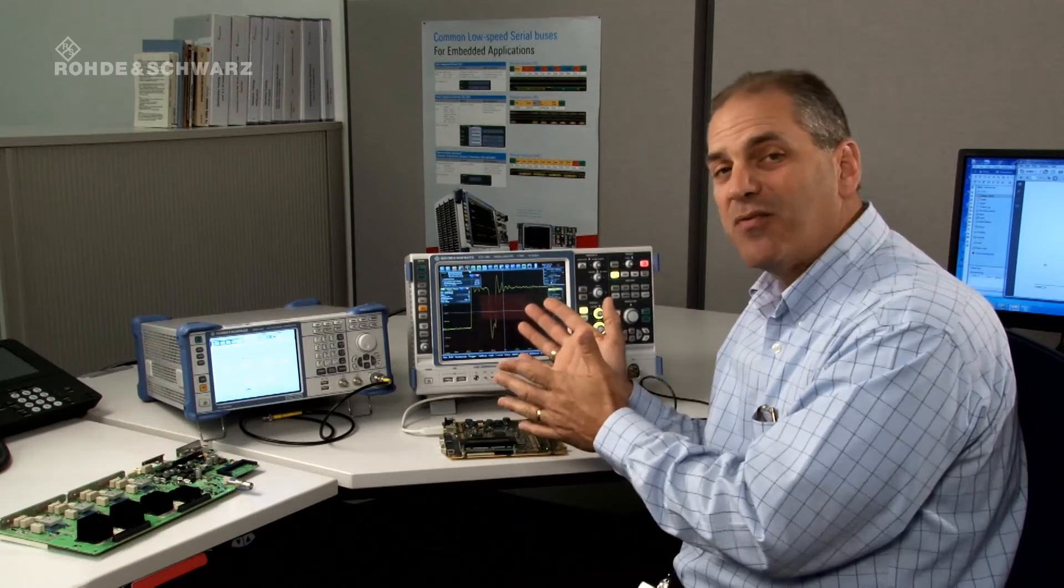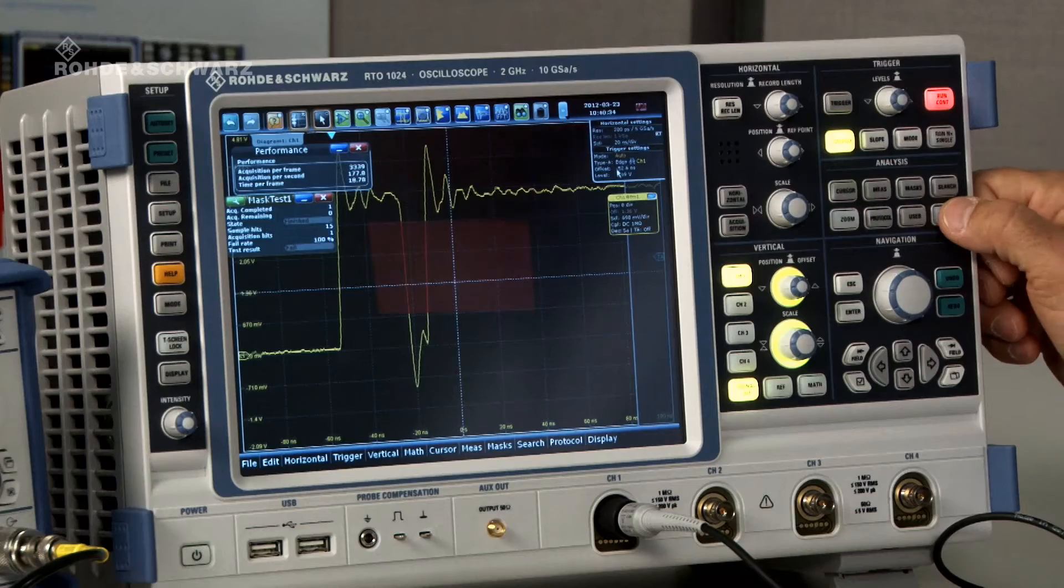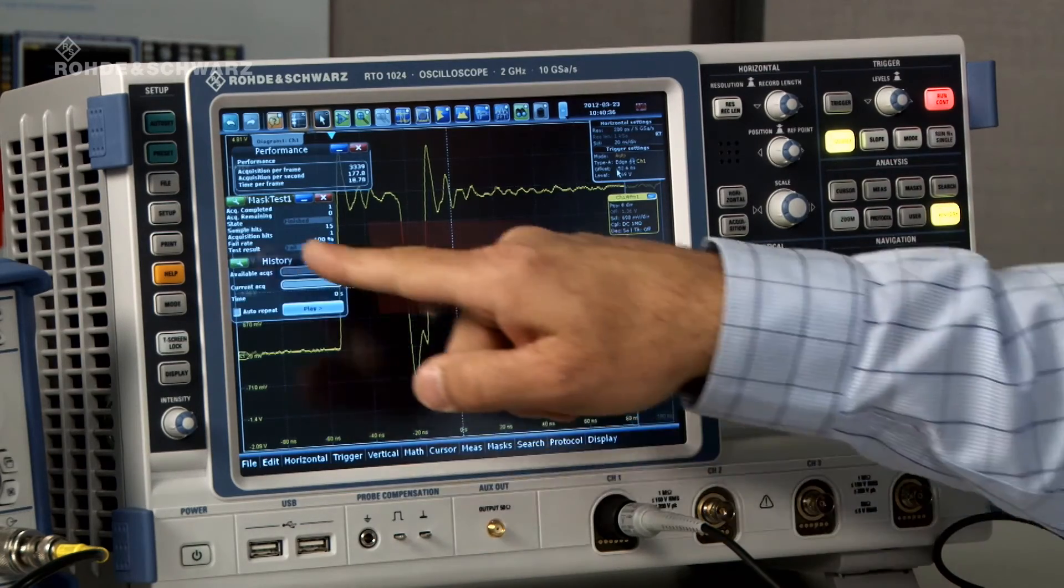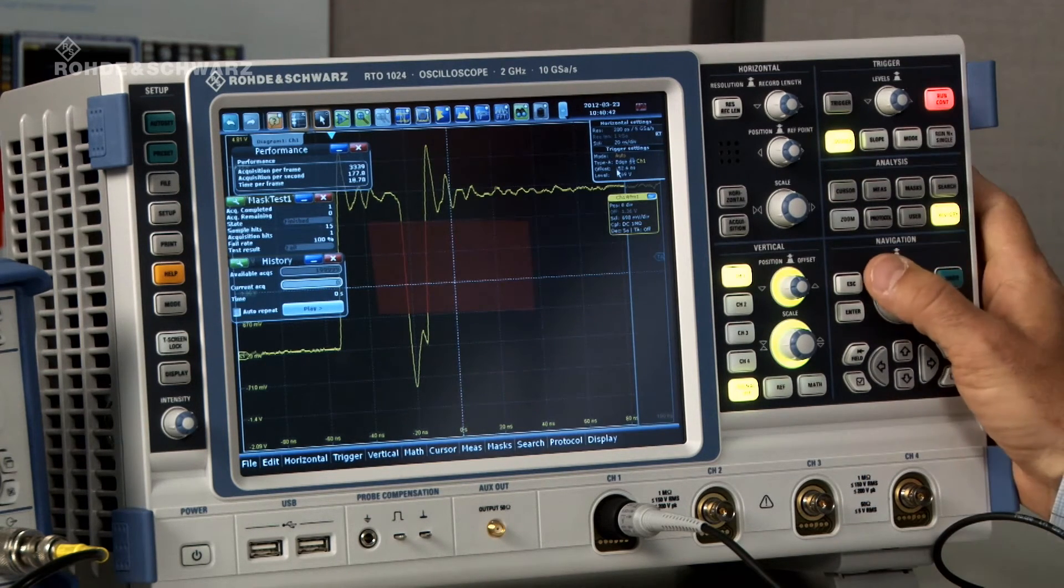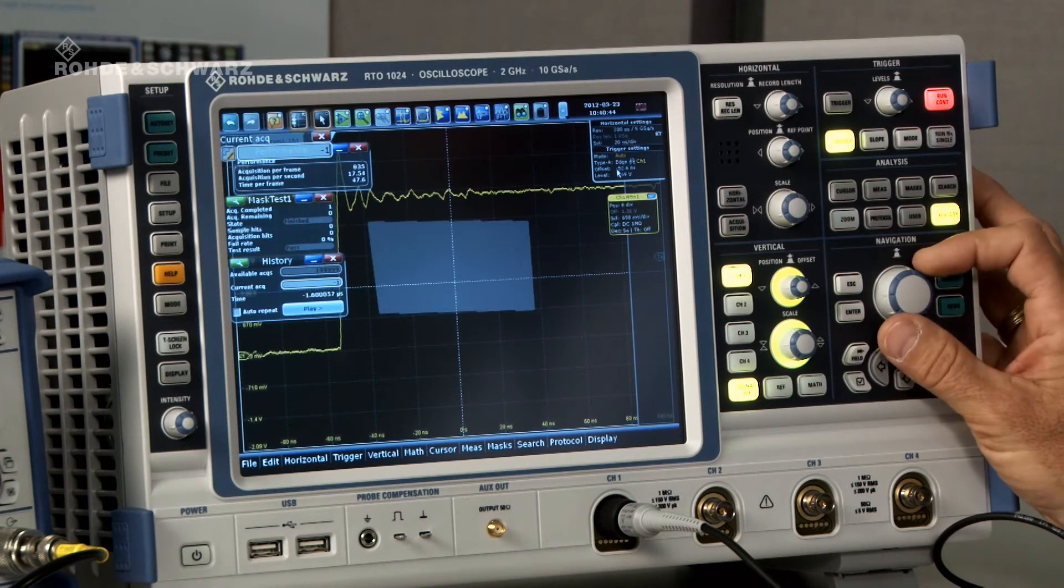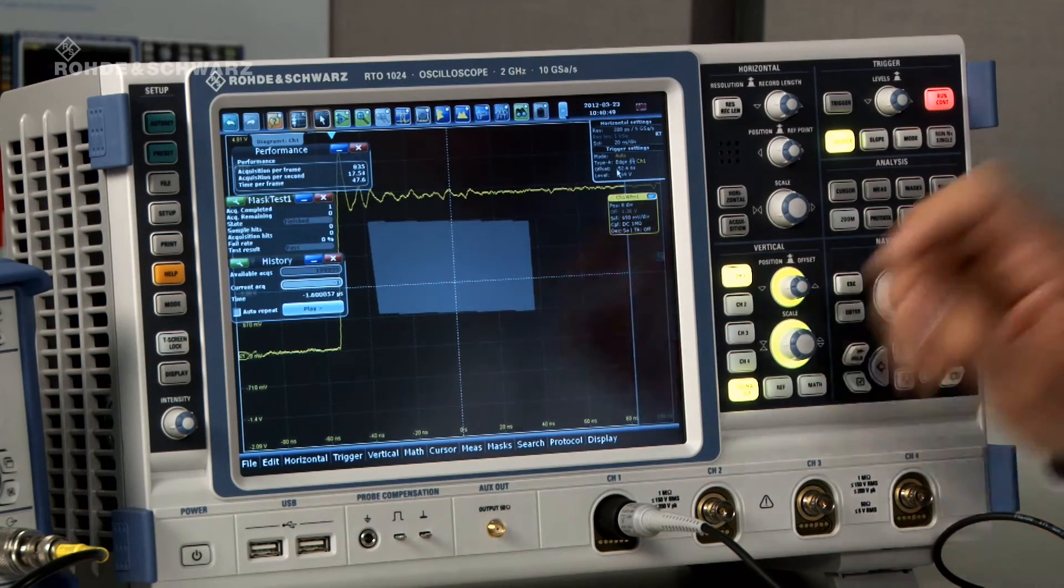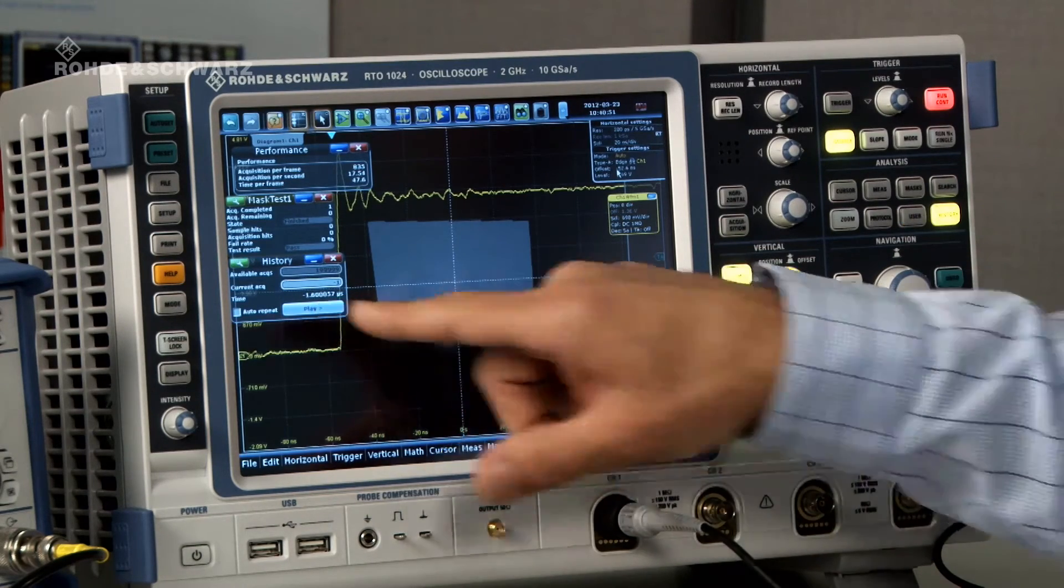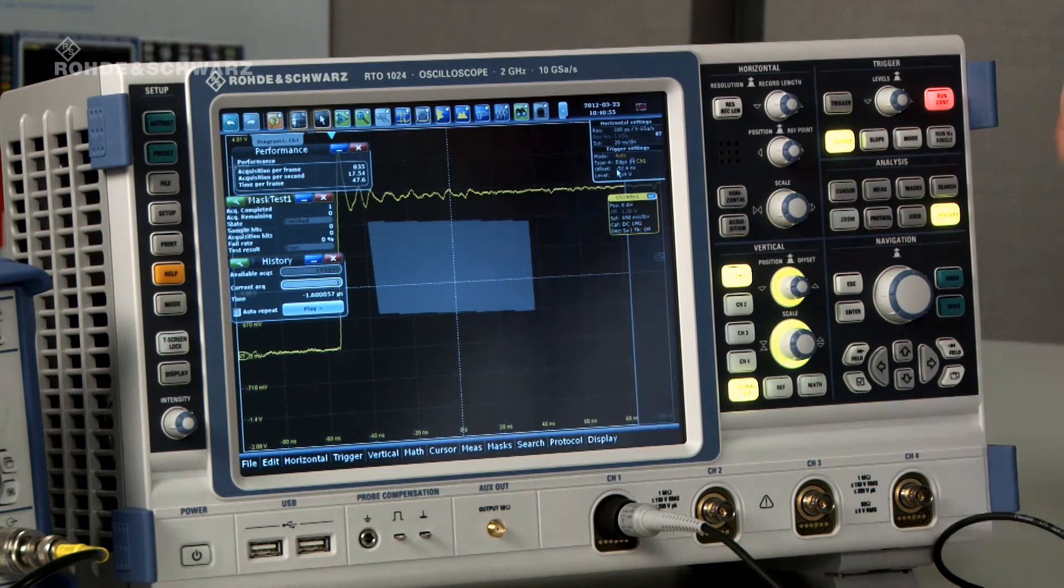And in the case of a mask failure, it's often a good idea to look at the history. We can access that history by pressing the history button on the front panel. And now we have a history box that allows us to navigate through this history of waveforms. And by turning this knob, I can actually dial back in time. And this is the transition that happened prior to the mask failure. And if you look over here, you'll notice the time was 1.6 microseconds in the past from the failure point.